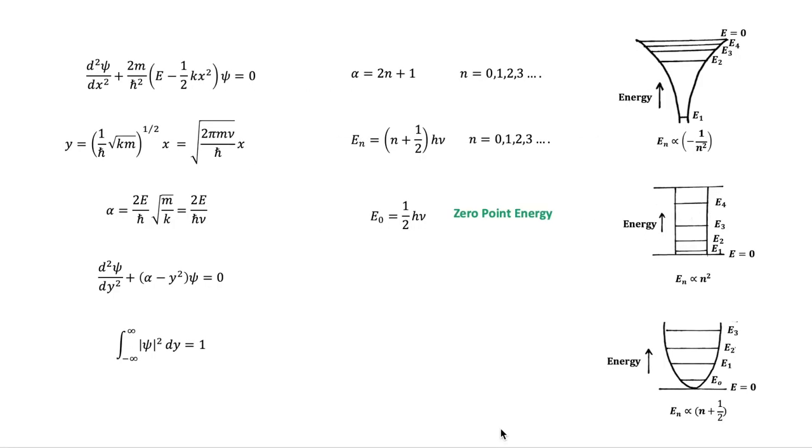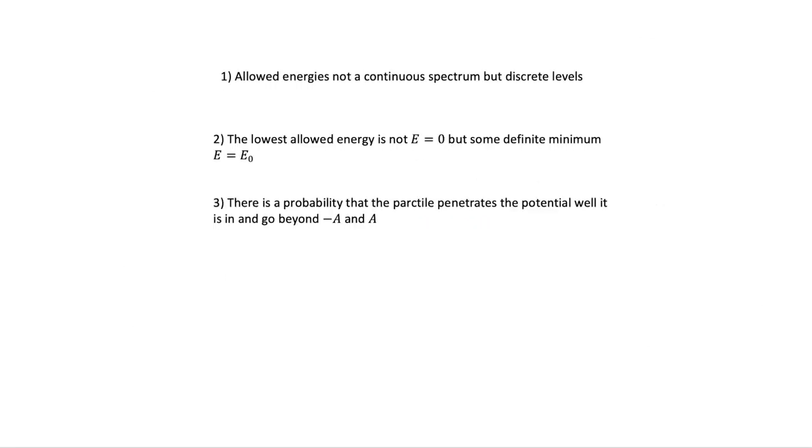Schrödinger equation for a harmonic oscillator is given by this equation. We can simplify it by introducing the dimensionless quantities Y and α. And μ here is the classical frequency of oscillation, which was given by this equation.